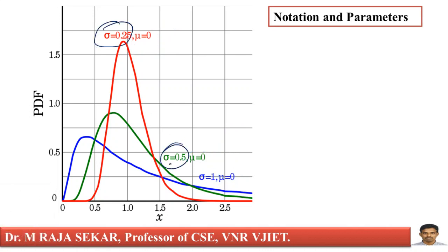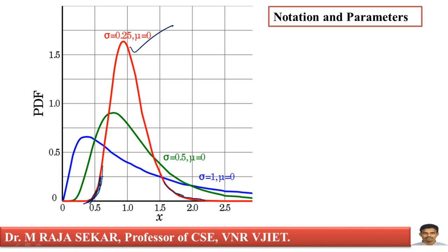The red curve looks somewhat like a Gaussian curve, but it's not truly Gaussian. If you observe the left side, it falls very quickly, whereas on the right side it starts falling much more slowly. As sigma increases from 0.25 to 0.5 to 1, the probability density function tends to flatten, getting more and more skewed.